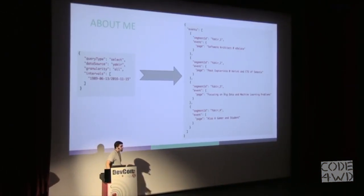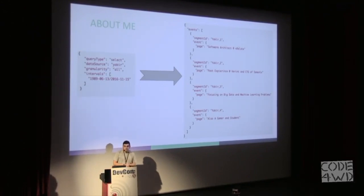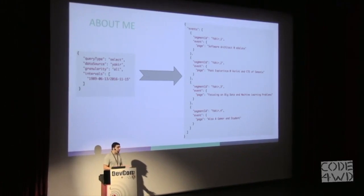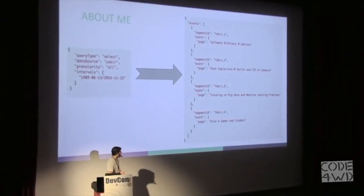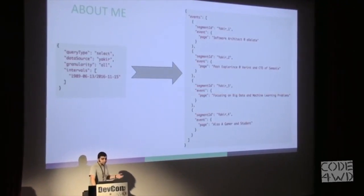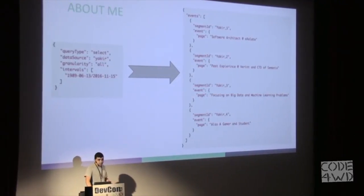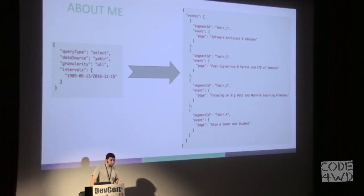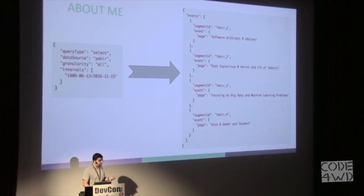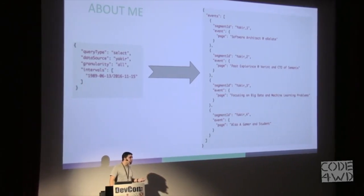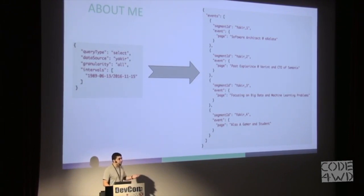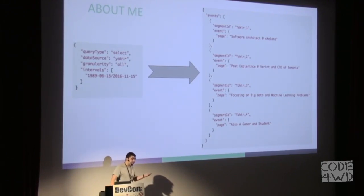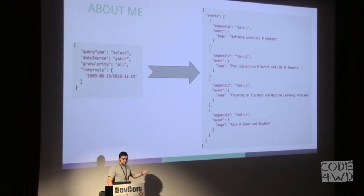Before talking about Druid, let me first introduce myself. Today I'm an architect at Exelate, mainly focusing on big data and machine learning problems. Exelate was founded in 2007 and aggregates device-level data from various online and offline sources. Using our own algorithms, we enrich this data with additional attributes, so we can infer that a specific device is being used by a male from the United States in the age of 15 to 20.